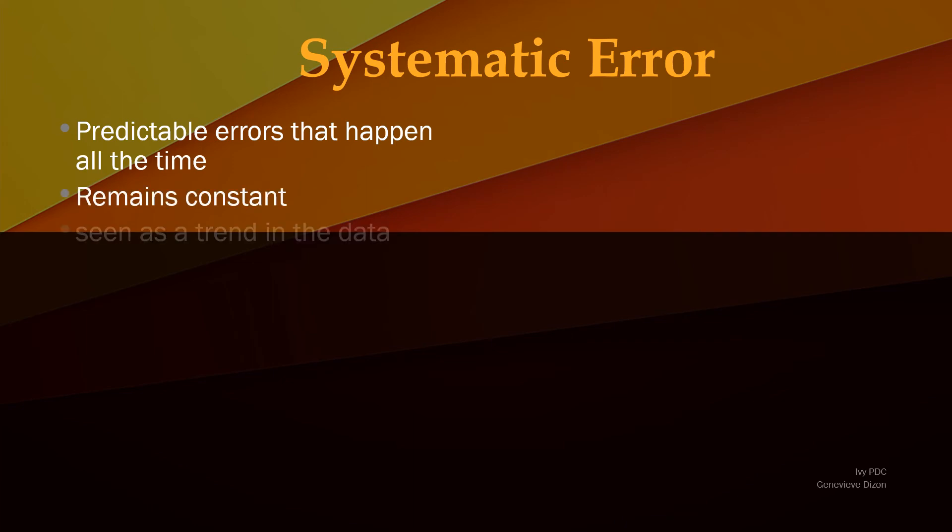The second type of error is systematic error. These types of errors are predictable and happen all the time. They remain constant throughout the different tests and are seen to give a trend in the data. They affect the accuracy of the test.